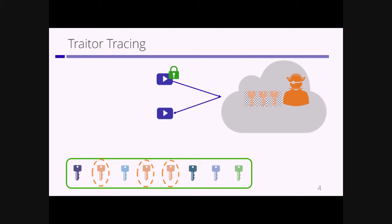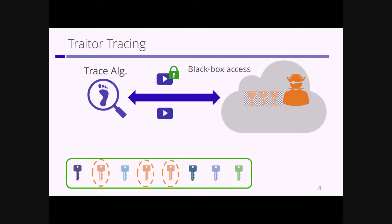If a pirate uploads this decoder program, anyone can decrypt the encrypted content. However, in a traitor tracing scheme we have a trace algorithm that has black-box access to the pirate decoder, and it can identify one of the corrupted users using that black-box access. This system can be used in pay-TV systems.